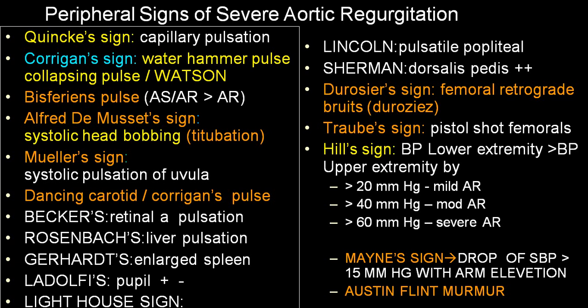Hill's sign is a difference between blood pressure in the lower extremity and upper extremity. More than 20 mm is mild, more than 40 mm is moderate, and more than 60 mm is severe aortic regurgitation. Blood pressure in the lower extremity is always more than in the upper extremity, and a difference of more than 20 mm is suggestive of aortic regurgitation. There is also Mayne's sign — a drop of systolic blood pressure of more than 15 mm with arm elevation.